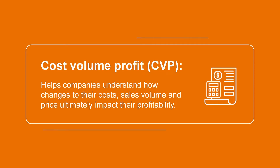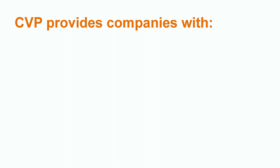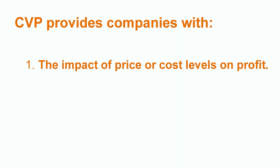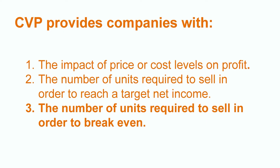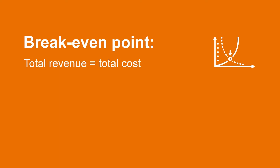Cost-volume-profit analysis helps companies understand how changes to their costs, sales volume, and price ultimately impact their profitability. It helps managers in both the planning and decision making process. CVP analysis can be used to provide companies with important information including the impact of price or cost levels on profit, the number of units required to sell in order to reach a target net income, or the number of units required to sell in order to break even. Ultimately, CVP analysis illustrates how revenues, expenses, and profits behave as the volume changes, which helps organizations plan and make decisions around their production and sales volume projections.